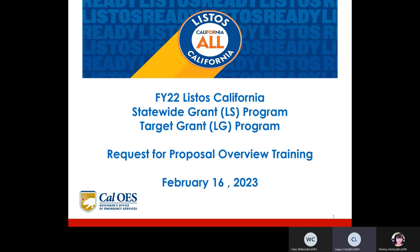Before I start, I'd like to go over a few housekeeping items. Number one, the presentation is being recorded and will be available for on-demand viewing later. Everyone who has joined should be on listen mode. We can't see or hear you, and the raise hand feature is off as well. All questions concerning the RFP, the process, or programmatic issues must be submitted in writing by email to listosgrants@caloes.ca.gov.